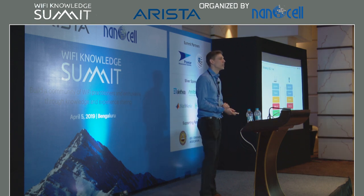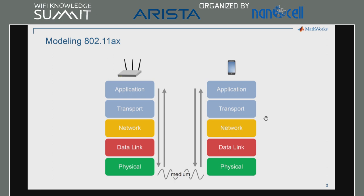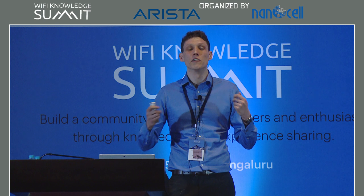Before I get into the details, I'd just like to set the scene a little bit. Conceptually, 802.11ax devices communicate over a number of layers, from the application layer down to the physical layer. Depending on your interest, you might be interested in simulating one or more of these layers. For example, if you're an engineer developing a scheduling algorithm for OFDMA, you might be interested in modeling at the data link or MAC layer. You can abstract these layers to help speed up your simulations.